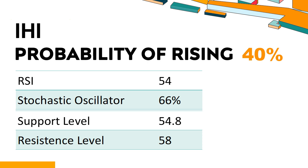Trend Outlook: IHI has a 40% probability of rising stock price. When the probability of rising is lower than 50%, it means that the probability of falling is relatively high. Combining multiple technical analysis indicators, IHI has four bullish signals and two bearish signals. If it falls below 55.6 during the session, it will have a chance to test 54.8.